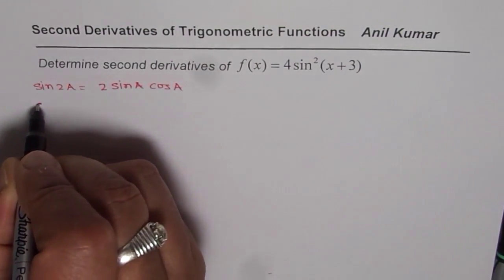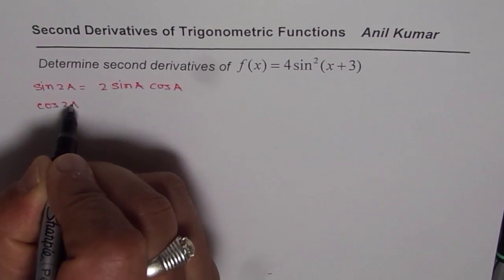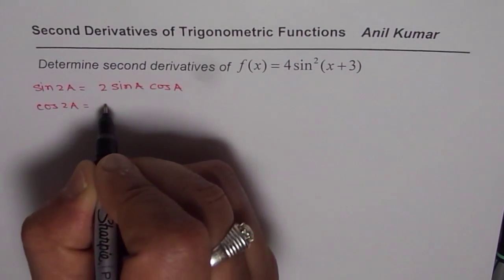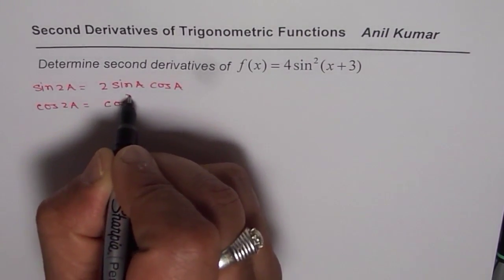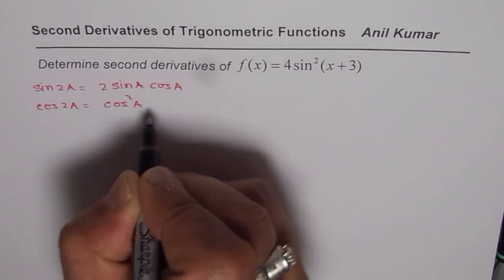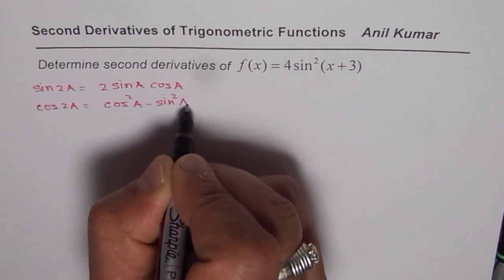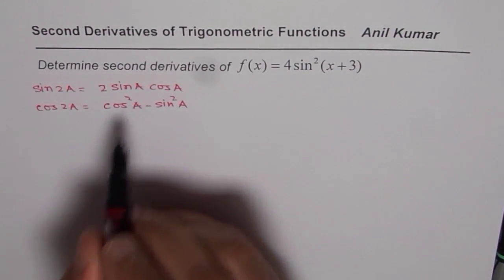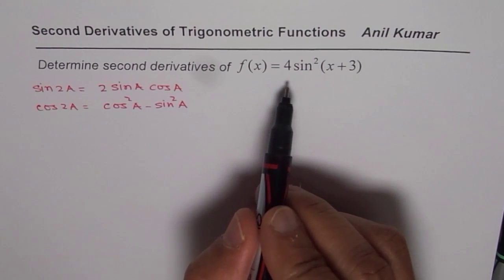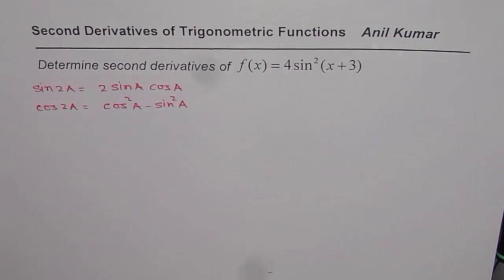Similarly, what is cos 2a equal to? Cos 2a equals cos square a minus sine square a. We might use these formulas in the simplification of this derivative.